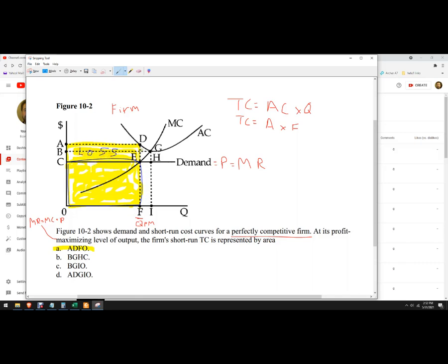If this firm is losing money in the long run, they should exit the market. In the short run, they should go ahead and produce as long as they're covering their average variable costs.